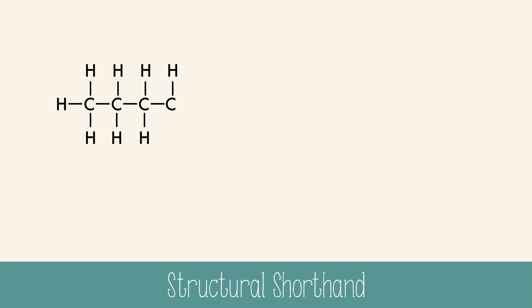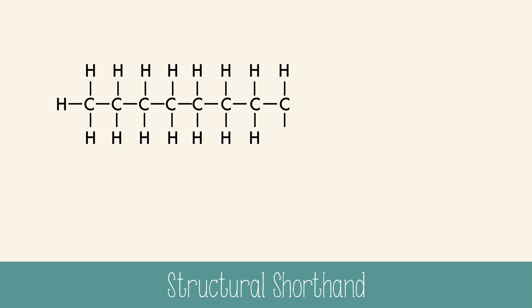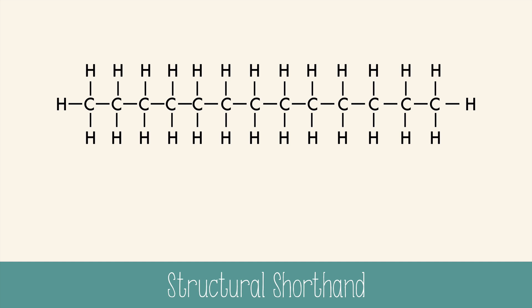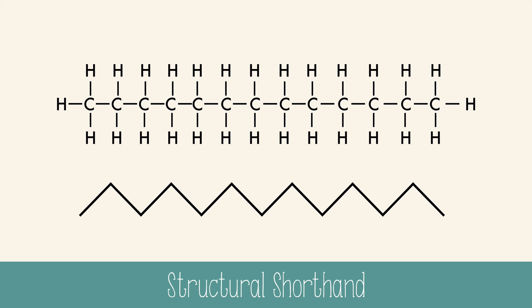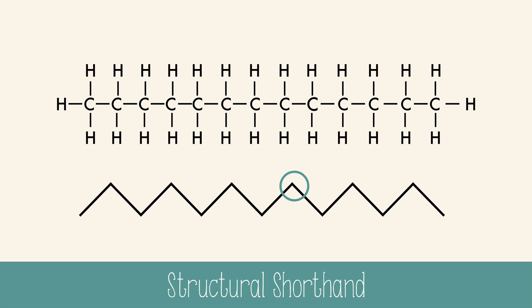Chemists sometimes choose to write every atom in a structure, but often molecules are so big and cumbersome that the structure is lost in all the letters, or it just takes too long to draw. So there's a simpler way to draw large organic molecules, like this. This is the same molecule. Each end and corner represents a carbon atom. There are 13 carbons in this molecule, and every carbon is represented by the ends and bends of this zigzag structure. It's assumed that hydrogen atoms are attached to the carbons, so hydrogen atoms are not shown in the drawing.